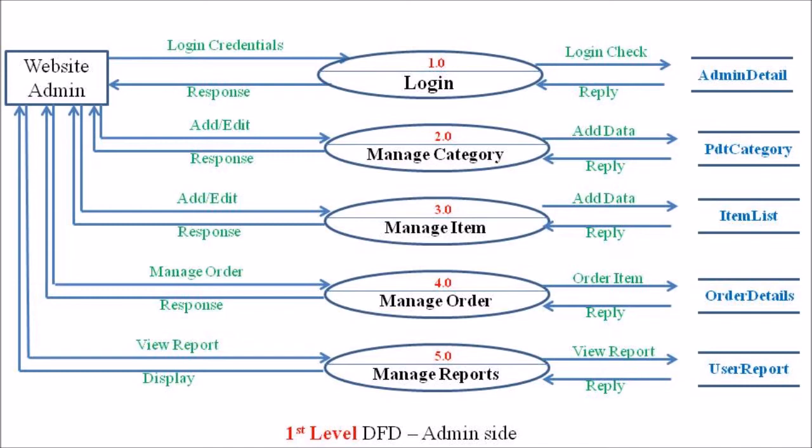The fourth process is manage order. When a customer orders a product, the admin verifies availability, checks order details, and arranges shipment based on the delivery principles of the website. The fifth process is manage reports, where the admin can verify the volume of business done on the website by checking the user report database.